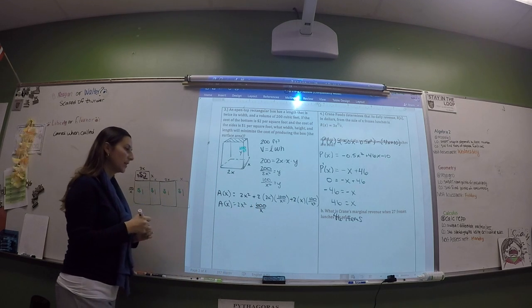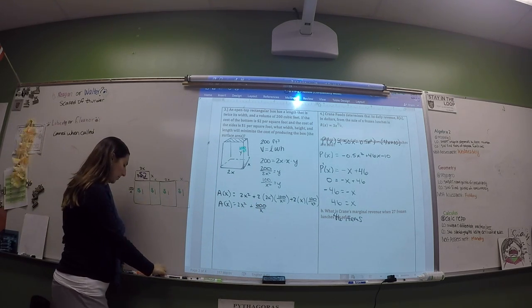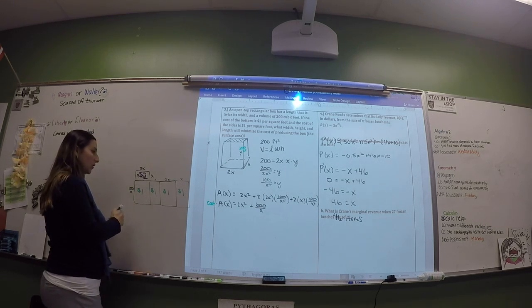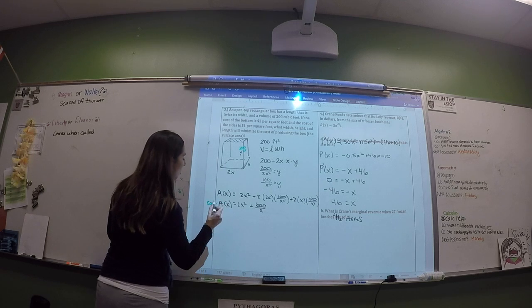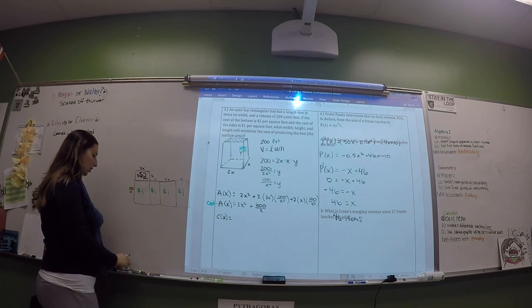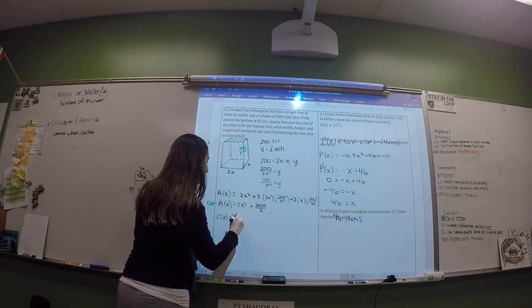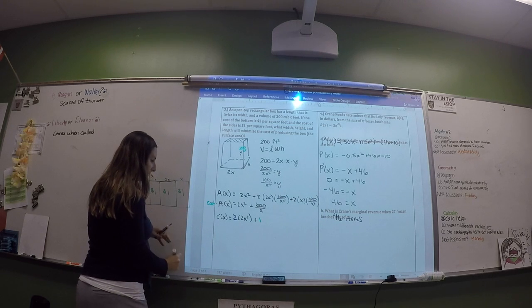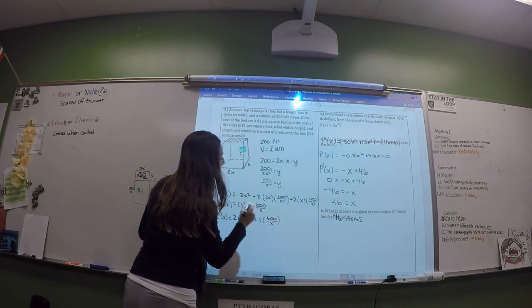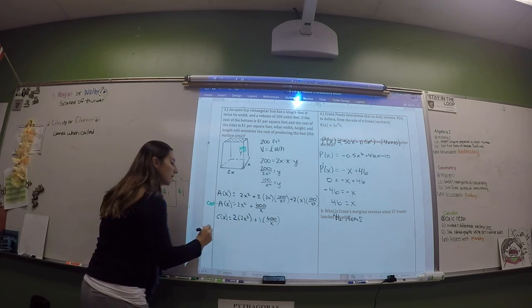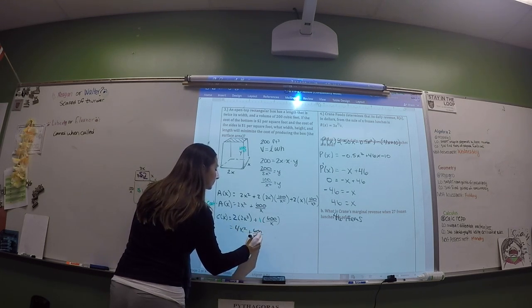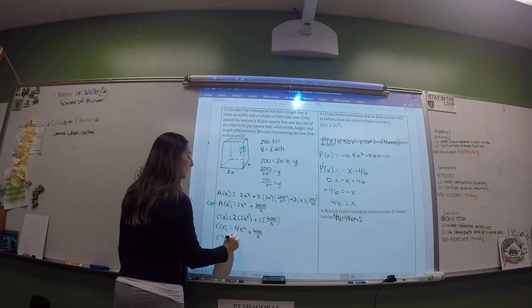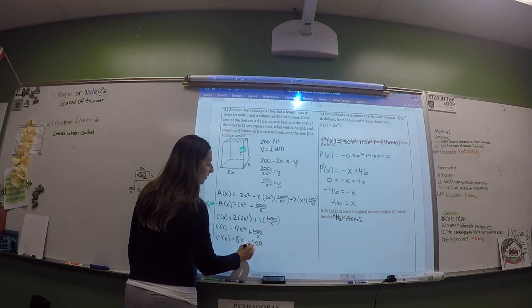That gives a total side area of 600/X. Now we create a cost equation by multiplying each area by its cost. The cost of the base ($2) times 2X squared, plus the cost of the sides ($1) times 600/X. That simplifies to 4X squared plus 600/X. To find the minimum, we need the derivative: 8X minus 600/X squared.